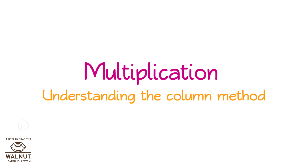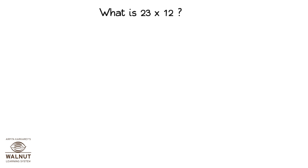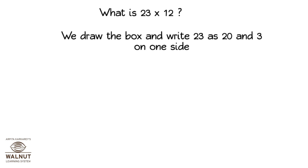Multiplication: Understanding the Column Method. What is 23 into 12? We have already seen the lattice method of multiplication. Let's see how to do 23 into 12 by the lattice method. We draw the box and write 23 as 20 and 3 on one side.